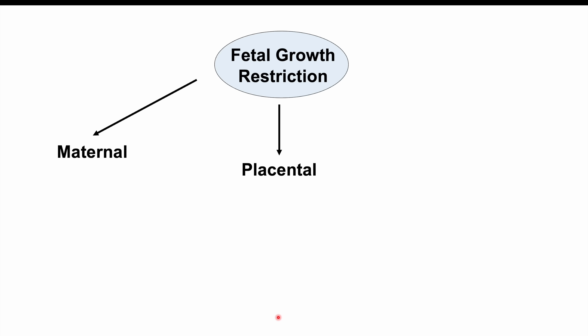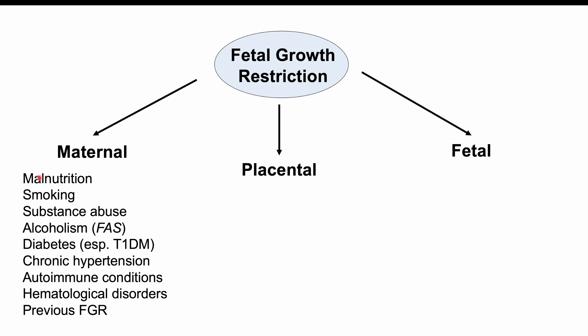The causes of fetal growth restriction fall into three categories: maternal, placental, and fetal. Maternal causes include malnutrition, smoking, substance abuse, alcoholism — which can lead to fetal alcohol syndrome — diabetes (especially type 1), chronic hypertension, autoimmune conditions like lupus, hematological disorders like certain thrombophilias, and a previous history of fetal growth restriction.